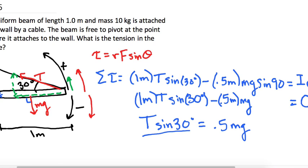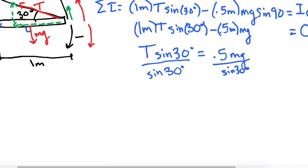All right, so now we just divide by sine of 30, divide by sine of 30. Okay, so now we're done. We've solved for T. And so this is canceled.